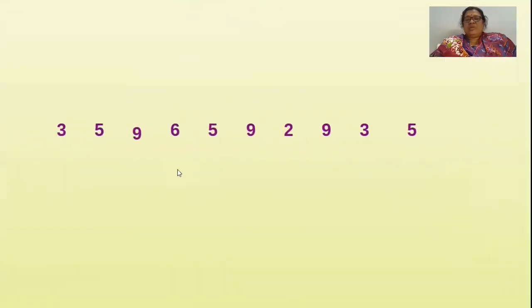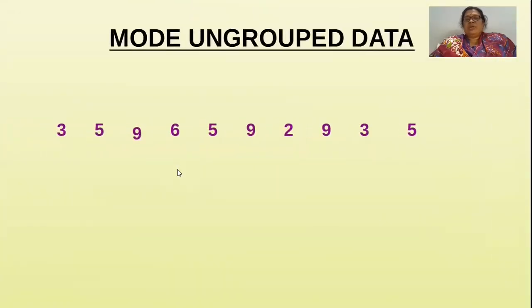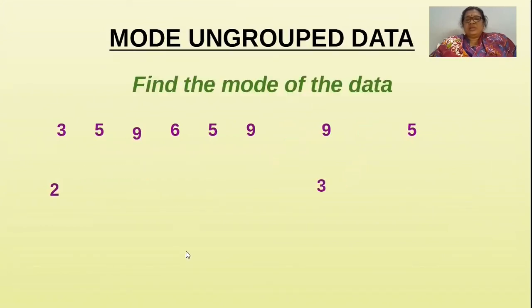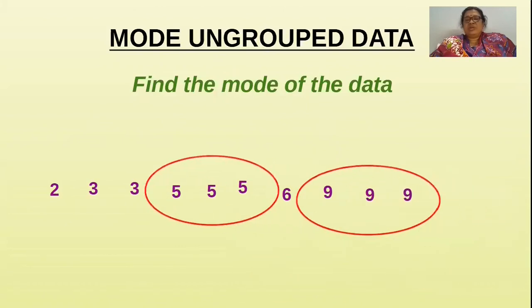Now we will find out mode for ungrouped data. These are the data given. First what we have to do? We have to arrange this data in an ascending order like this. Once when we arrange these numbers in ascending order the most frequently occurred number will be the mode of the data.